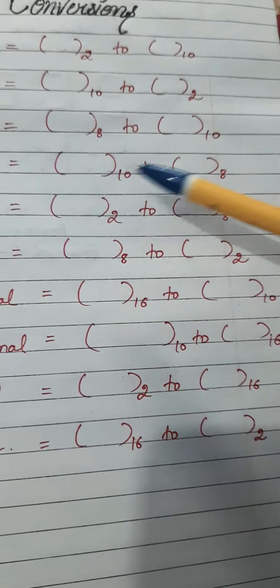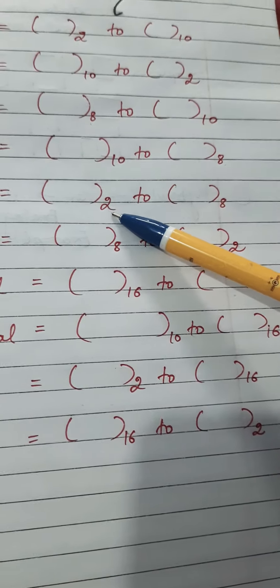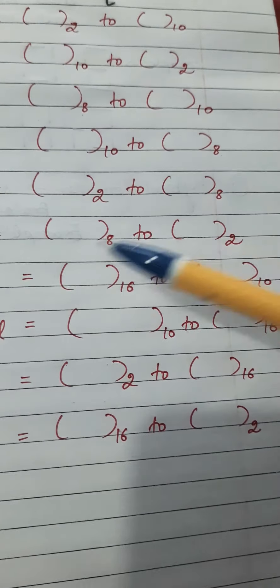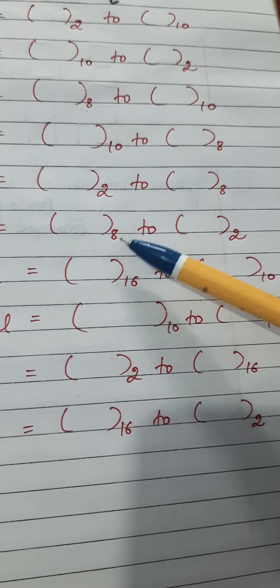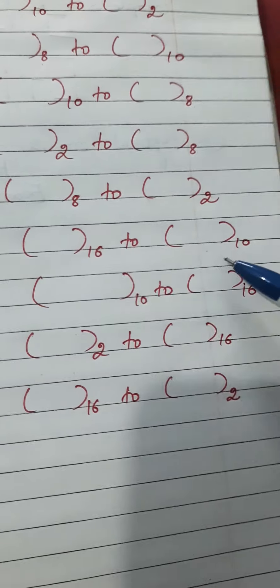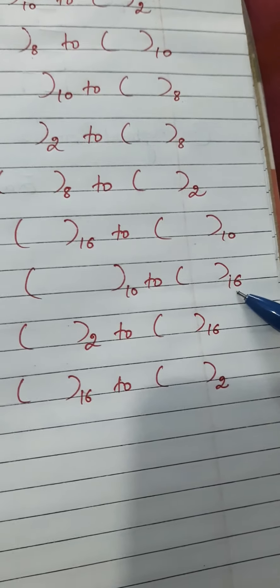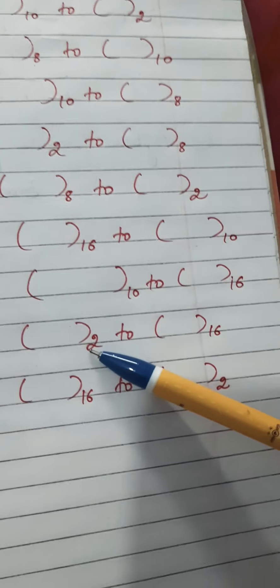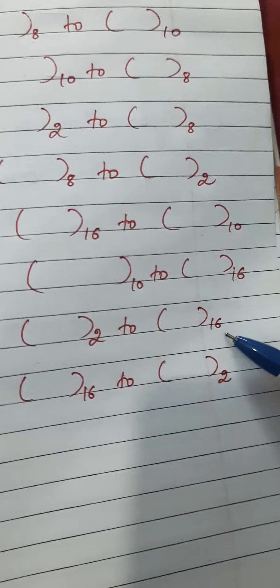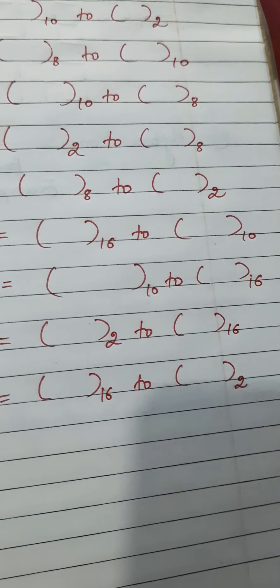That is 10 to 8, and 2 to 8 — meaning binary to octal, and octal to binary. Then we have hexadecimal to decimal, decimal to hexadecimal, binary to hexadecimal, and last is hexadecimal to binary.